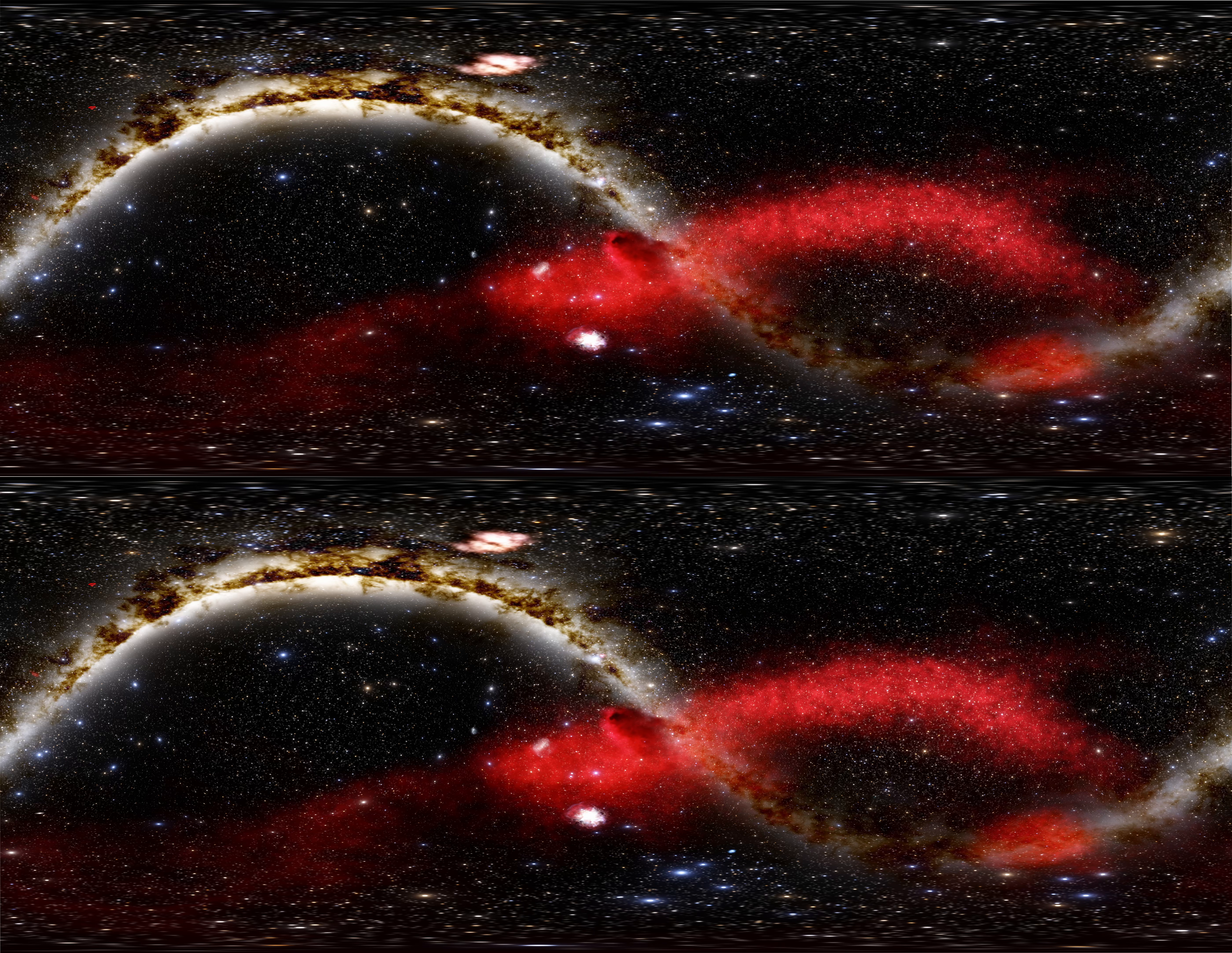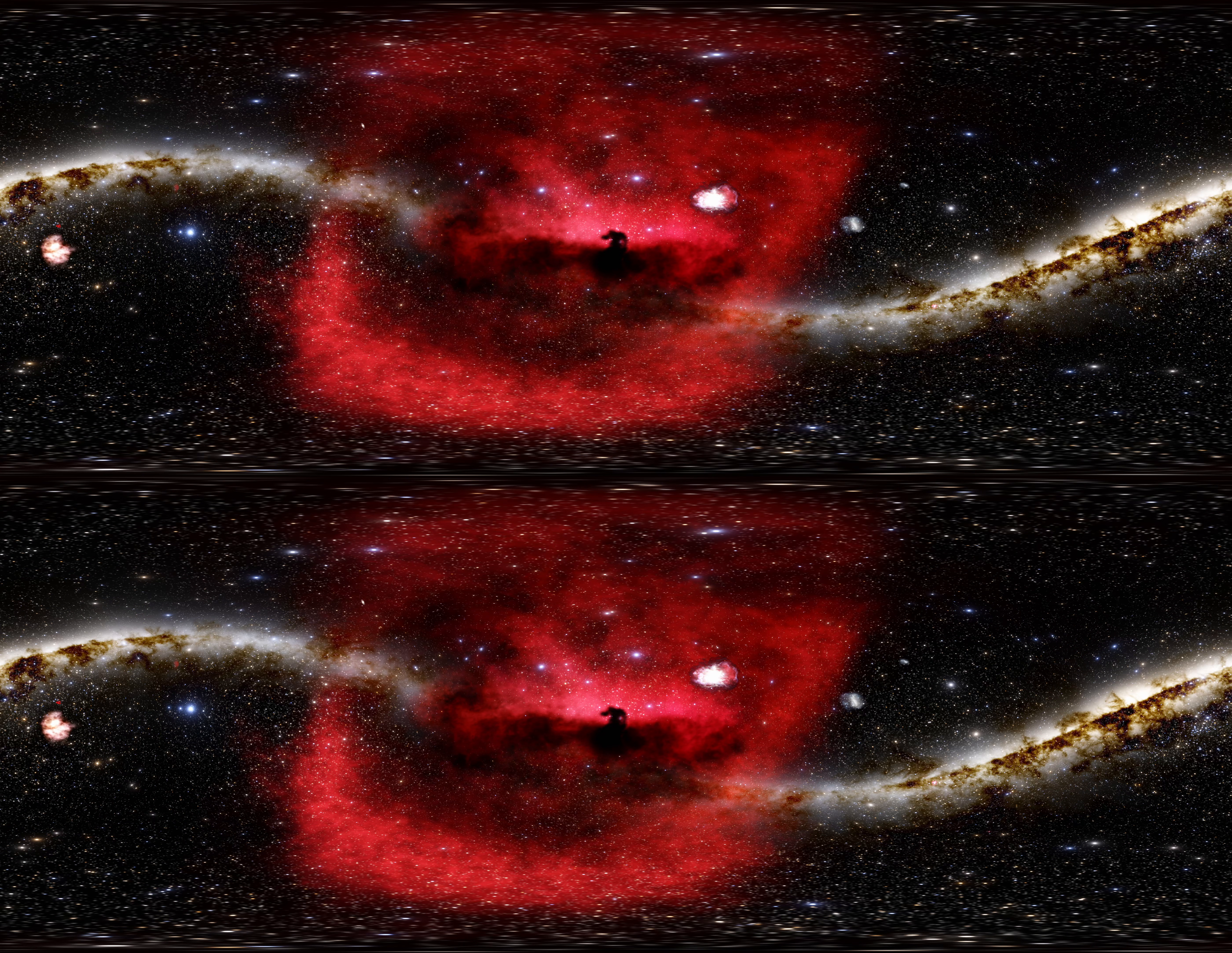The Horsehead Nebula, also known as Barnard 33, is one of the most famous and recognizable dark nebulae in the night sky. It is located in the Orion constellation and is part of the Flame Nebula, located near Orion's belt.